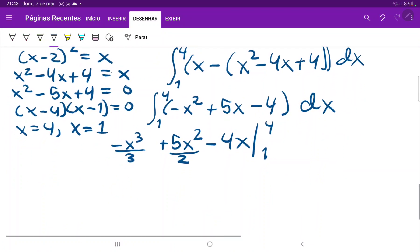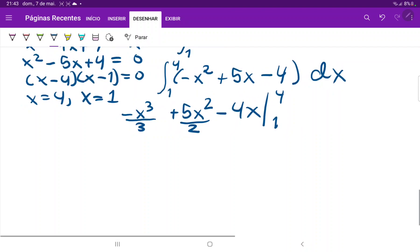So all that's left for us to do is to compute our boundaries. So let's compute the upper boundary. This is minus x cubed, so that is 4 cubed which is 64 over 3, and then plus 5 times 4 times 4 which is 5 times 16, 80 divided by 2 plus 40, and then we have minus 4 times 4 so minus 16.